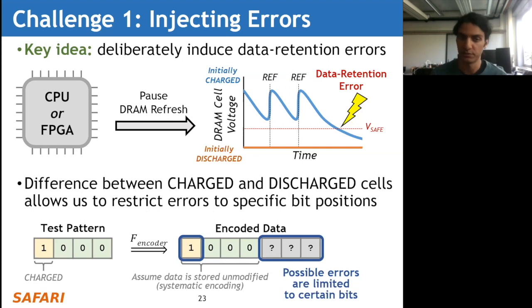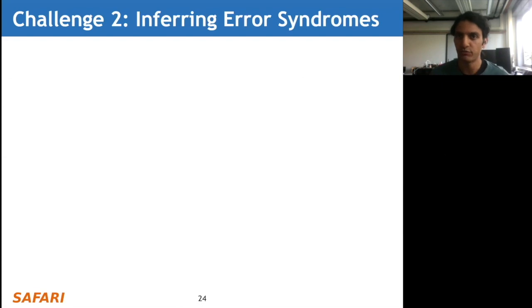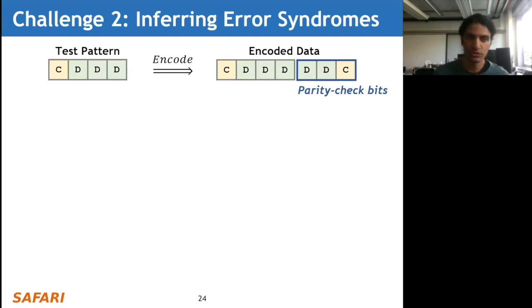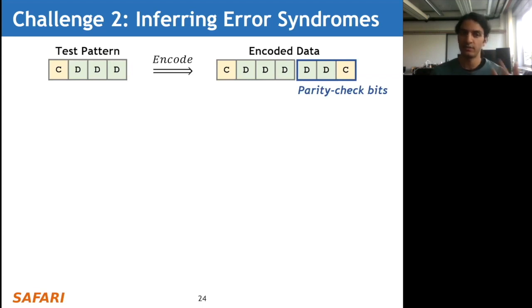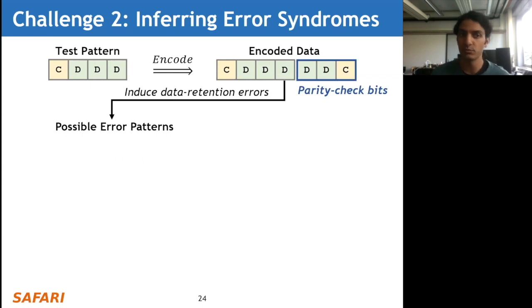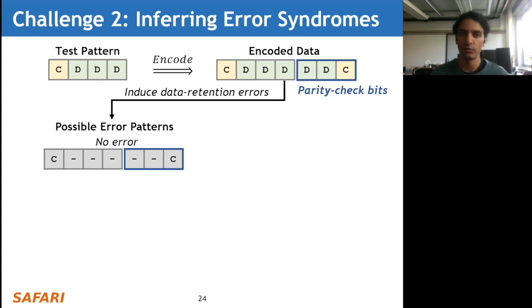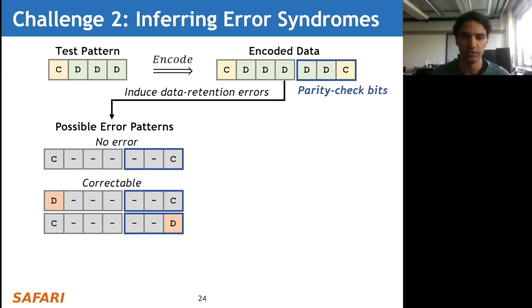The second challenge is to infer error syndromes. Since we cannot directly see them, we need to find a way to observe some effect of computing different error syndromes within the DRAM chip. Suppose we start with the same test pattern - after ECC encoding, two parity check bits are in the discharge state and one is in the charge state. When we induce data retention errors, several possible error patterns might occur. The first is no error at all. The second is correctable errors where one of the two charge bits flips - as long as there's a single error, the single-error-correcting code will correct it and we won't observe any effects outside the DRAM chip.